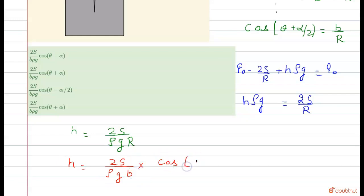cos(theta plus alpha by 2). We put the value of 1 by r, right. So this is the answer.